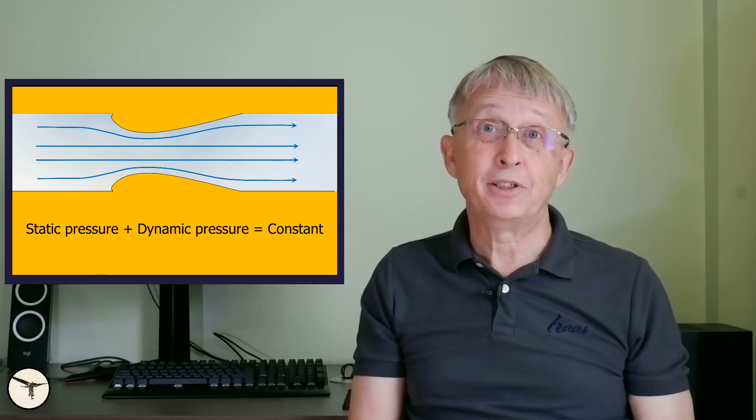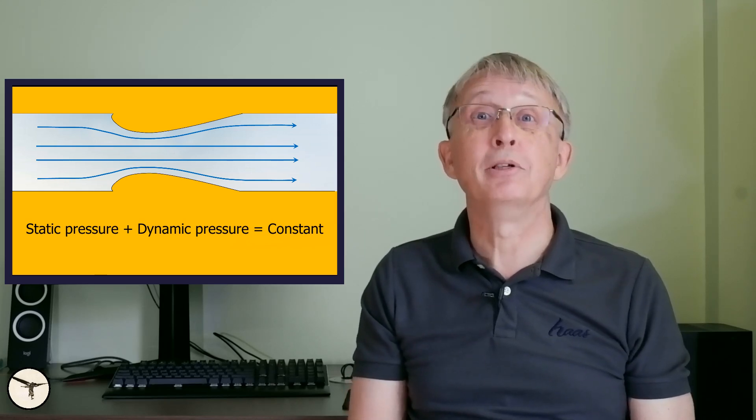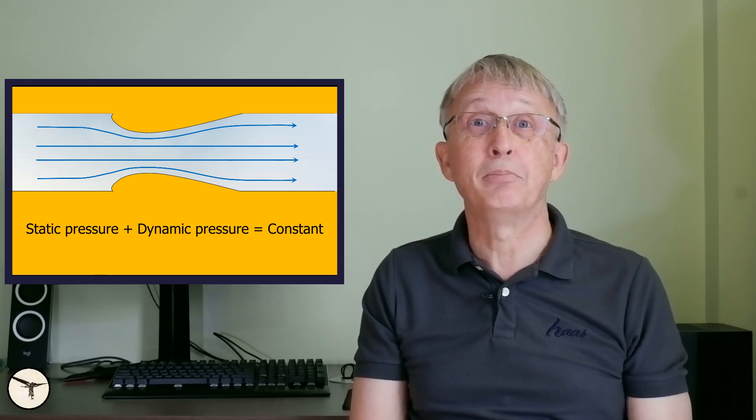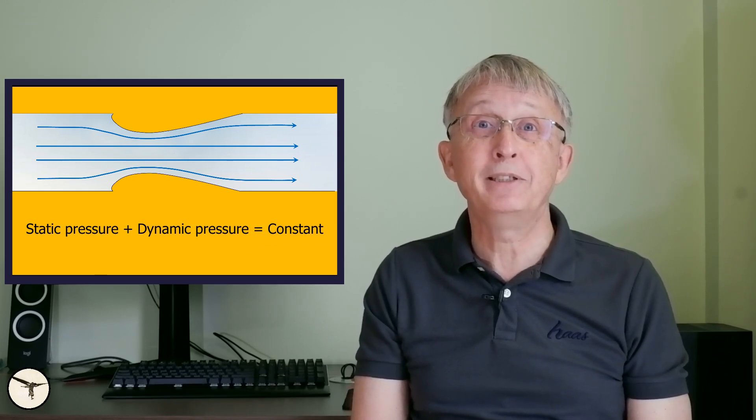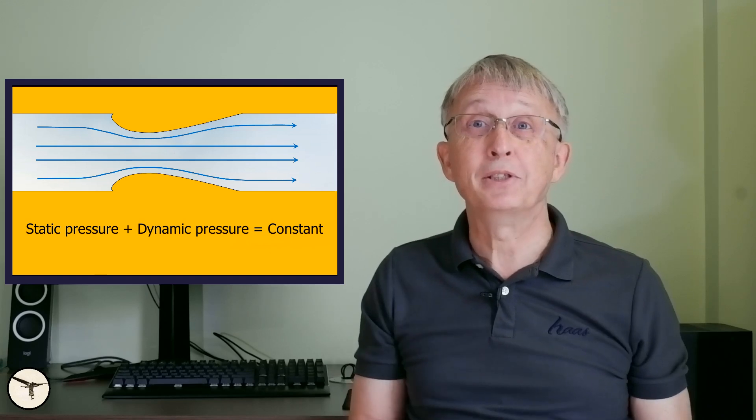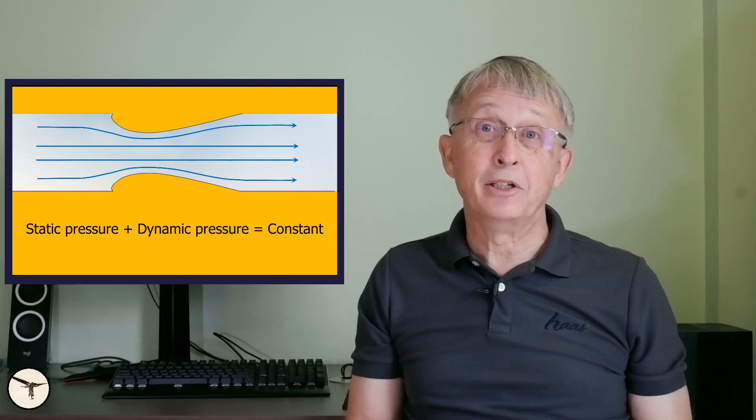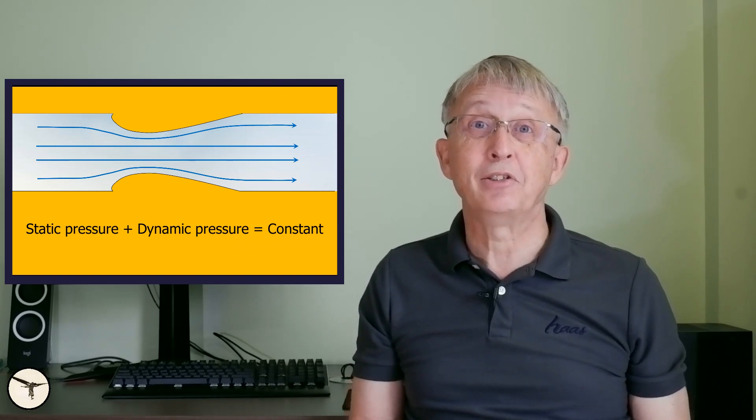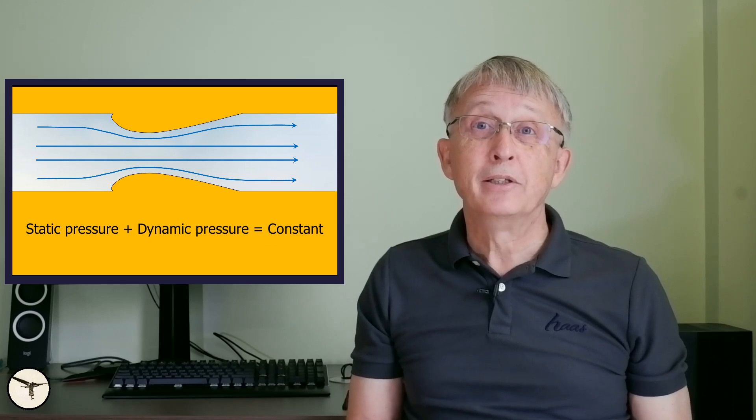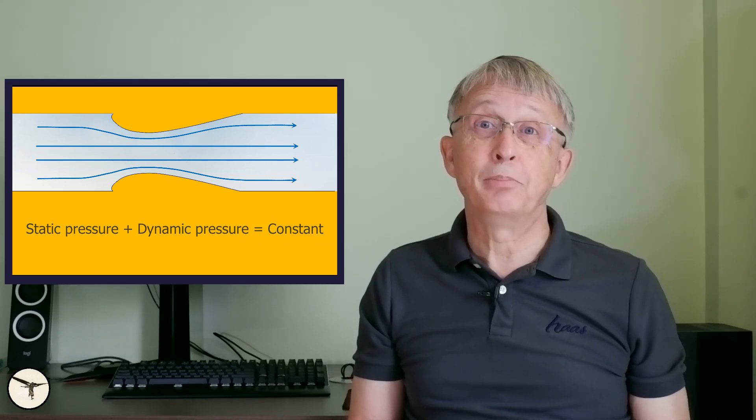This idea originates from the Venturi tube. According to Bernoulli's equation, the total pressure in a tube with a flowing fluid is constant. When the tube is narrowed, the air is forced to flow at a higher velocity. This means the dynamic pressure is increased and the static pressure is reduced. The idea is that if you replace the upper half of the Venturi with a flat plate, you have a wing profile.